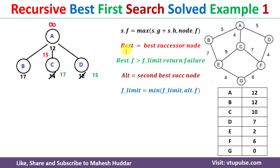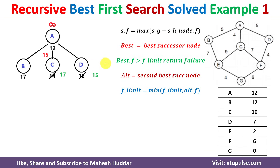Among A's three successors B (17), C (17), and D (15), D is now the best with f=15. parent f-limit is infinity, so 15 is not greater than infinity. The alternate is C (or B) with f=17. New f-limit = min(infinity, 17) = 17. We proceed to expand D with f-limit=17. D is not the goal node, so we find its successors A and F.